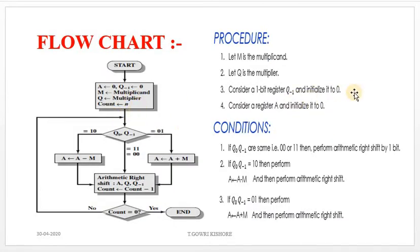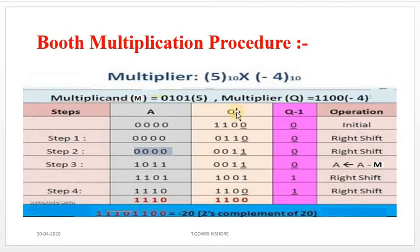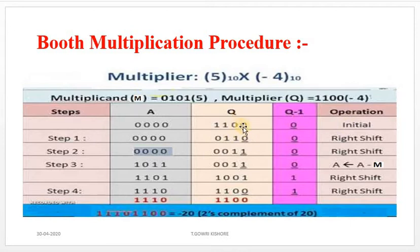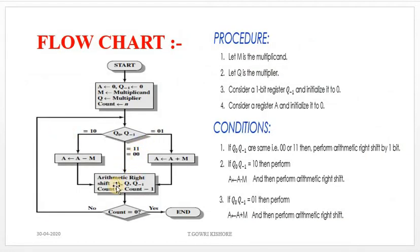Now we check Q naught and Q minus 1. Q naught is the least significant bit of the Multiplier Q. Here the LSB of Q is 0, and Q minus 1 is also 0, so both are the same. In Step 1, since both are same (0 0), we apply an automatic right shift.